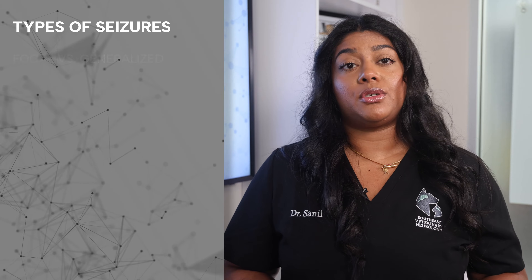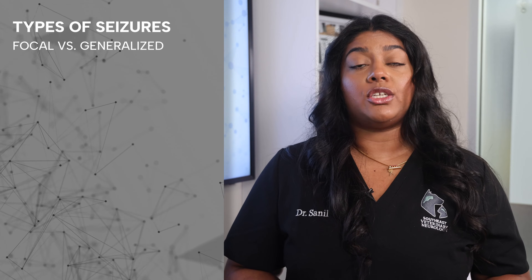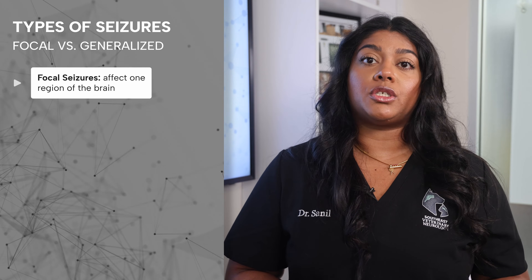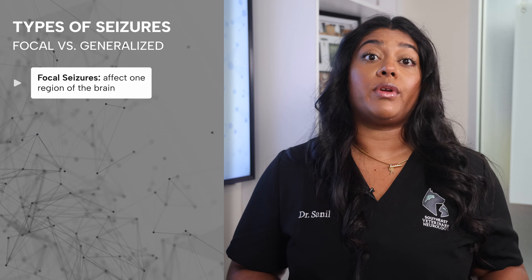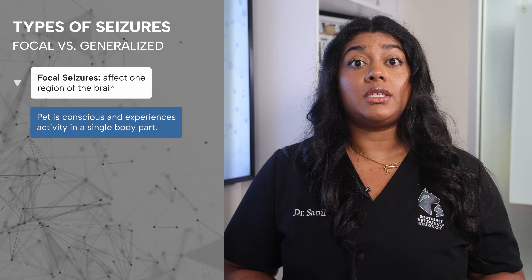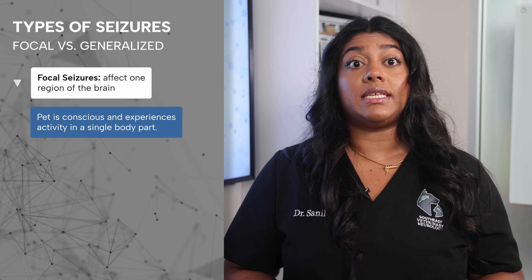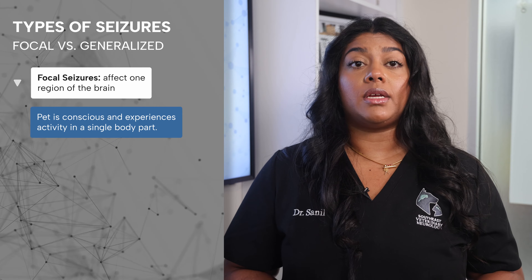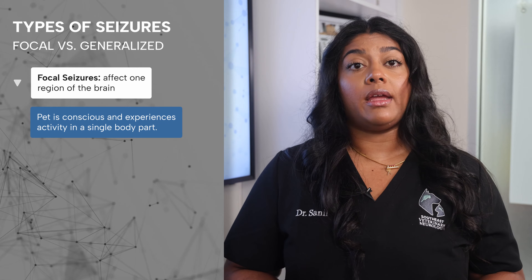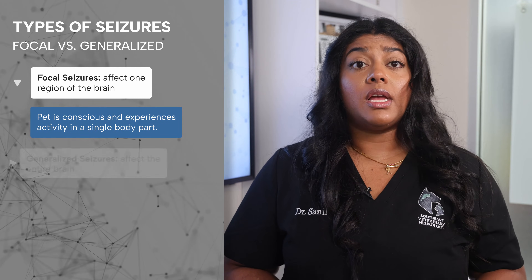There are two types of seizures: focal seizures and generalized seizures. Focal seizures are limited to one region of the brain. Your pet is conscious and may only experience activity in a single body part, such as tremoring of the lip or the eye or even hypersalivation.